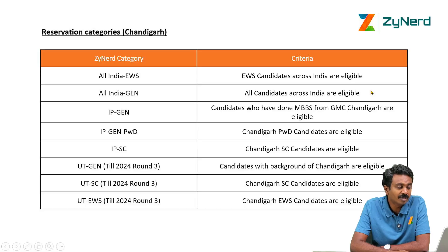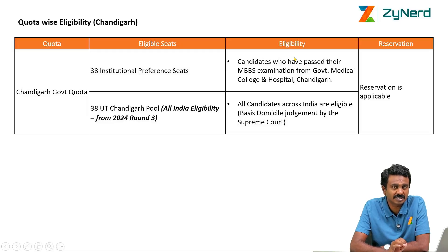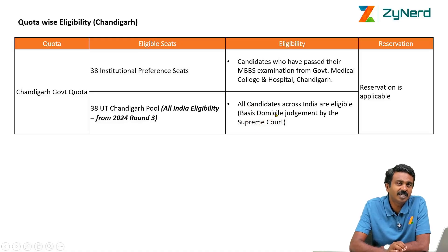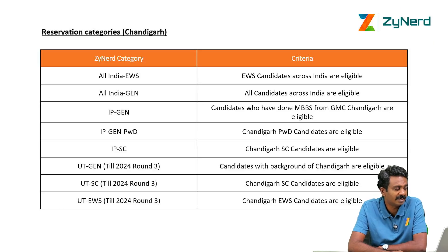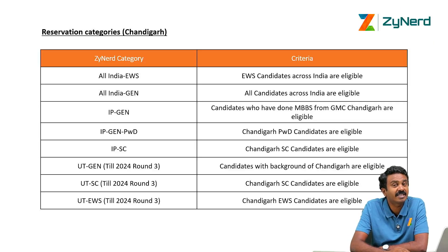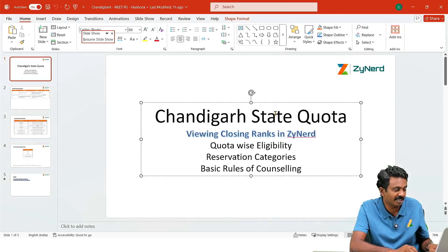Reservation is applicable for both, but for IP seats a Chandigarh certificate is required — a Chandigarh state candidate can avail those reservations. For UT Chandigarh pool seats, any state reservation certificate is fine. Chandigarh only had EWS and SC reservation last year. This year there might be OBC reservation with the new judgment that has been implemented for MBBS, but we will have to wait and see how that is implemented for PG. The reservation categories, if you go into Chandigarh, might be a little complicated — we will show you what to do.